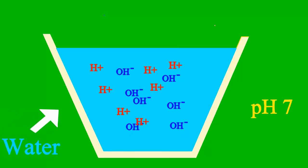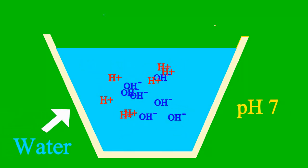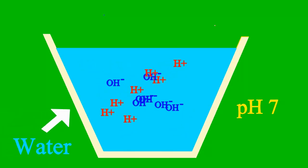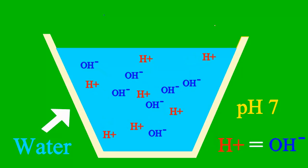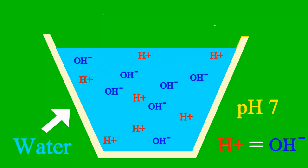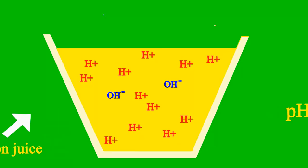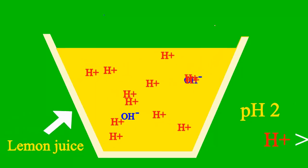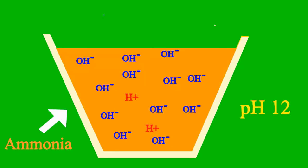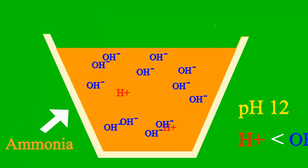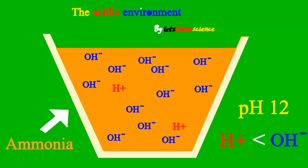When the pH is 7, it's a case where the sample is neither an acid nor a base. But less than 7 is acidic, and more than 7 it's a base all the way.